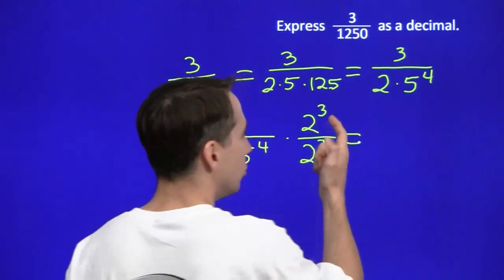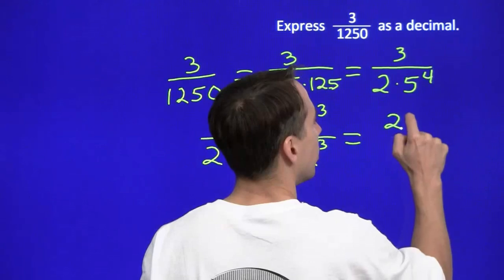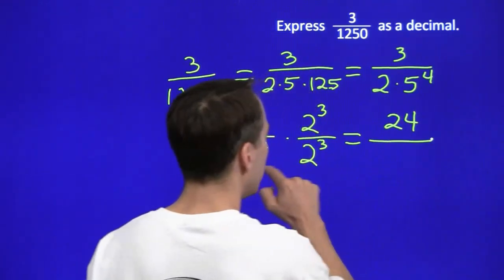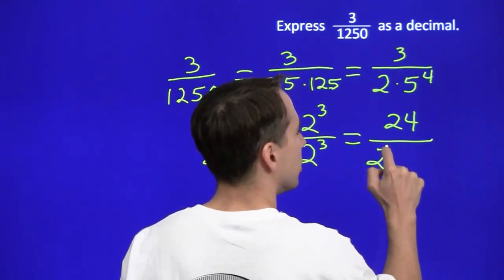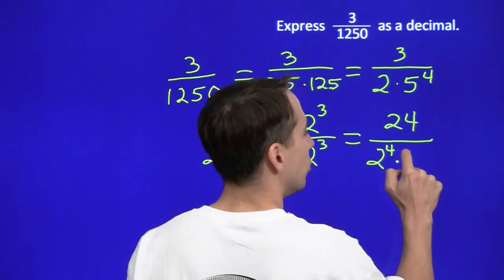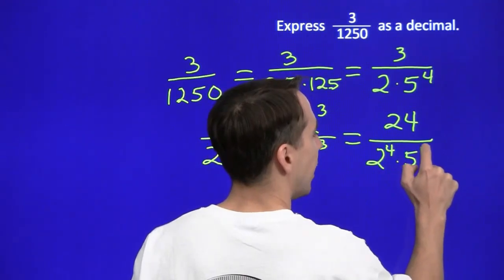3 times 2 cubed. 2 cubed is 8. 3 times 8 is 24. And the 2 cubed goes with the 2 that we already have to give us 2 to the 4th times 5 to the 4th.